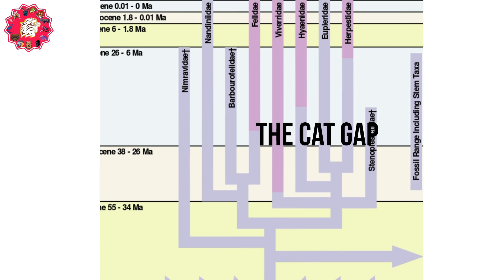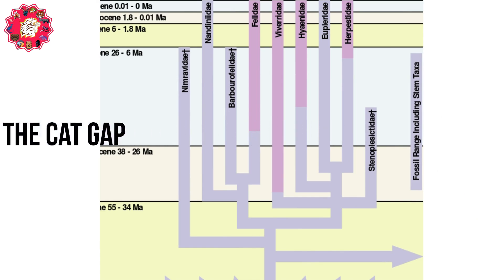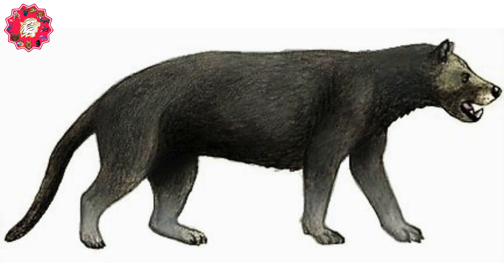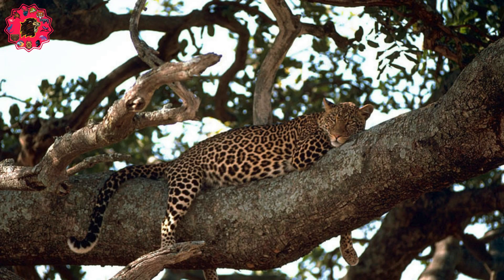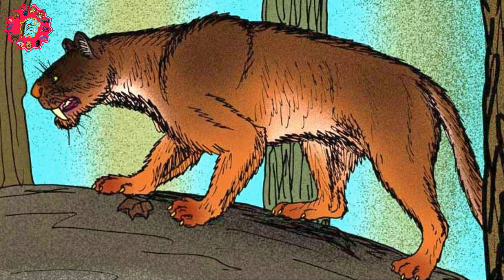The Cat Gap. Following Proailurus, there came a period of time known as the Cat Gap, where for 7 million years since the emergence of this animal, there was a lack of any new felid fossils, a problem especially prominent in North America. What's more, many of the old feliforms present on the continent, such as the Nimravids, showed a sharp decline as well.